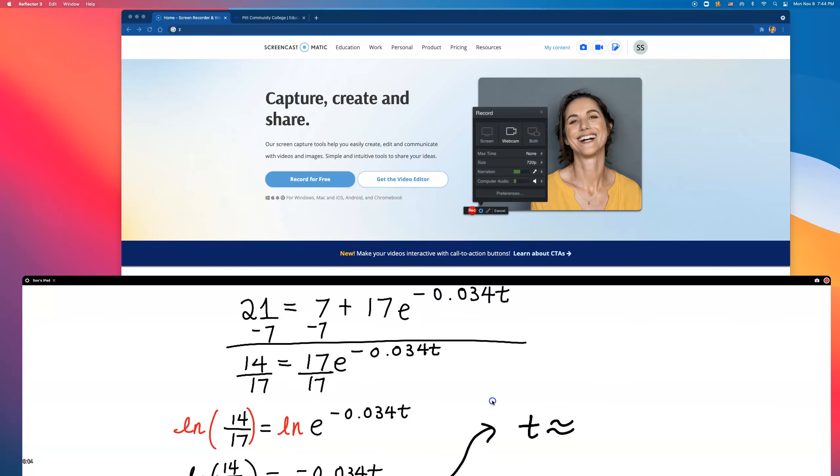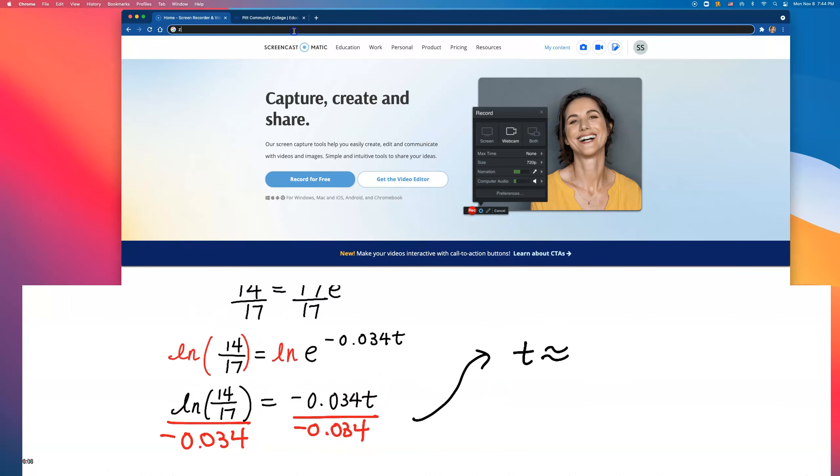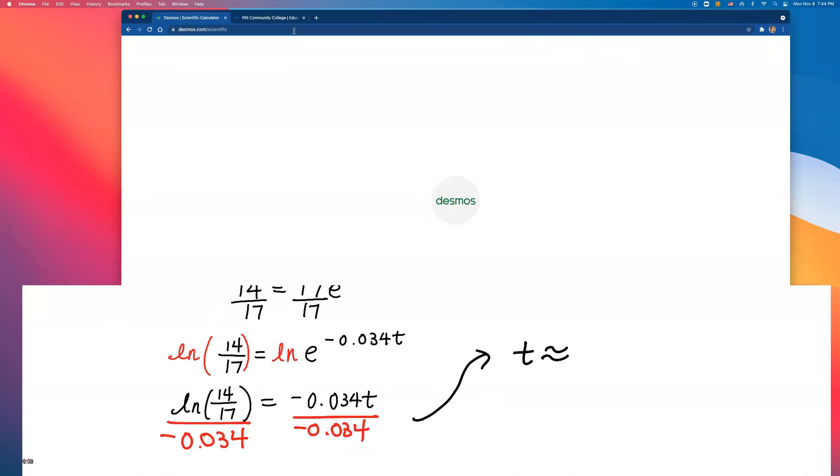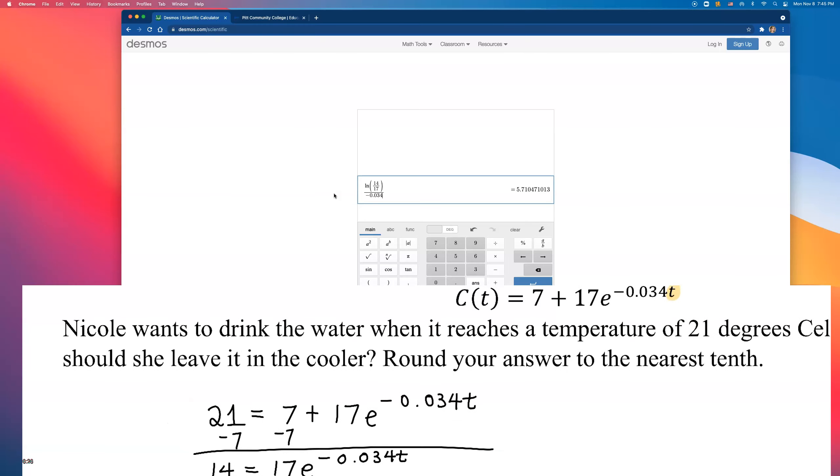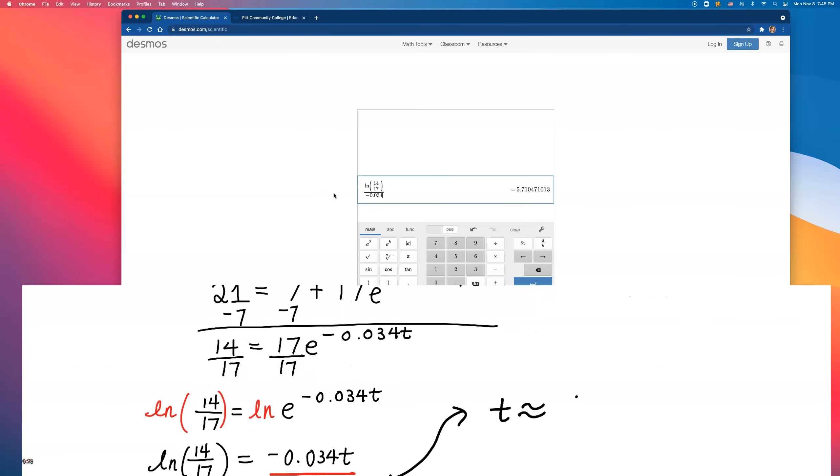Natural log of 14 over 17. Uh-oh. Whoopsie. Let me try again. Natural log of 14 over 17. And we're dividing that by negative 0.034. And that comes out to be, oh, she doesn't have to wait that long. Nearest tenth. She just needs to wait about 5.7 minutes.